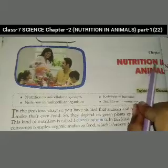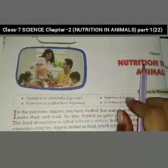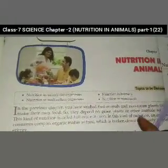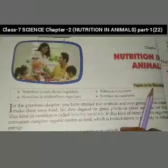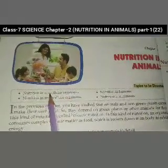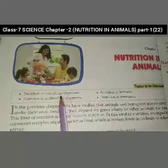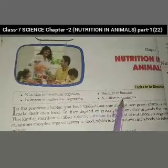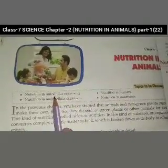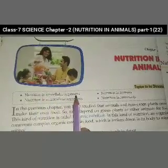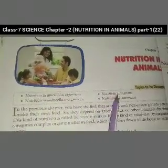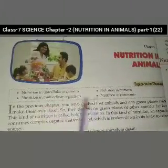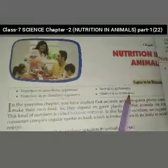Nutrition means 'poshan' (nourishment), and animals means 'janvaron mein' — so this chapter is about how nutrition happens in animals. Topics to be discussed in this chapter: Nutrition in Unicellular Organisms, Nutrition in Humans, Nutrition in Multicellular Organisms, and Nutrition in Ruminants.